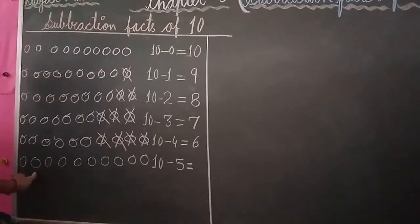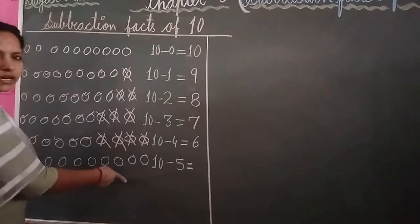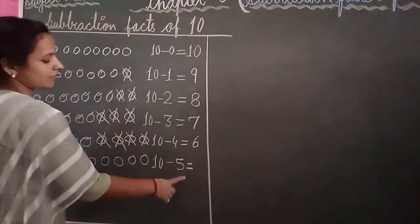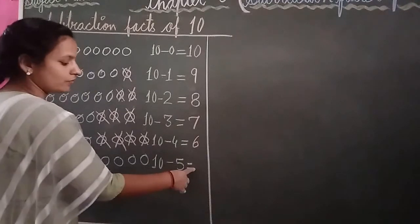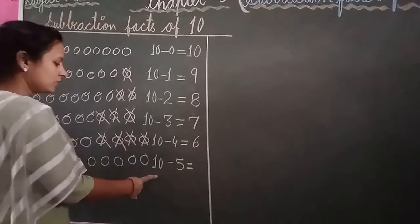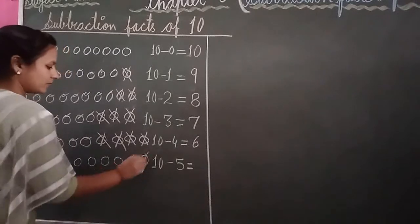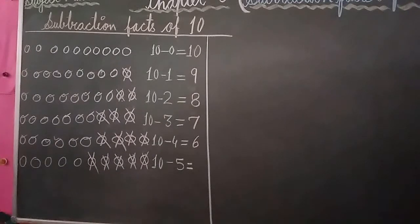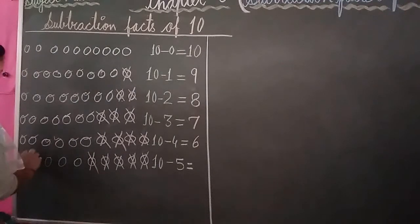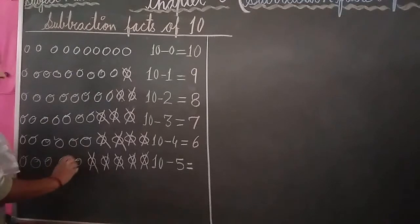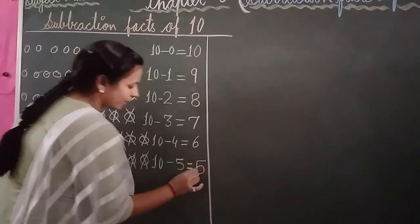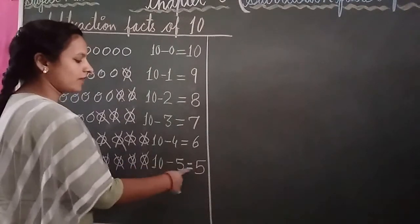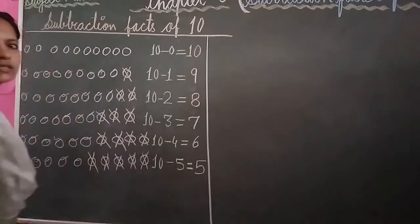Again draw your 10 balls. Write: 10 minus 5 equal to blank. Cut and cross out 5 balls: 1, 2, 3, 4, 5. Count the balls left: 1, 2, 3, 4, 5. How many balls are left? 5. The answer is 5. 10 minus 5 equal to 5. Is that clear?